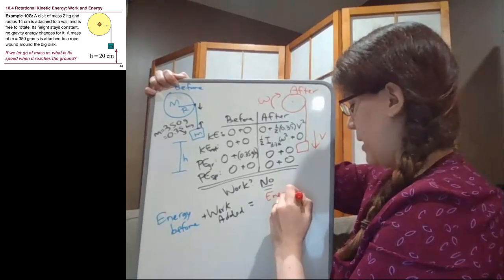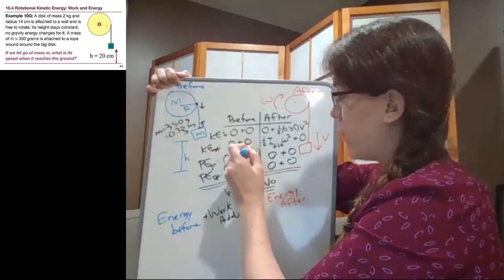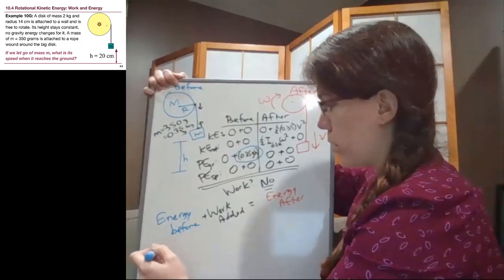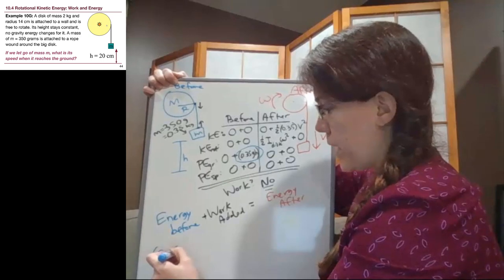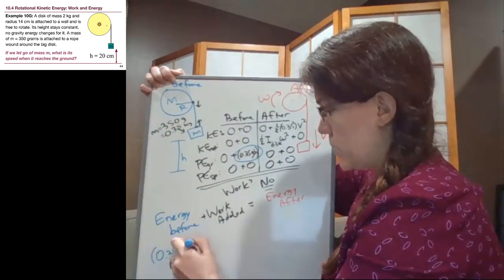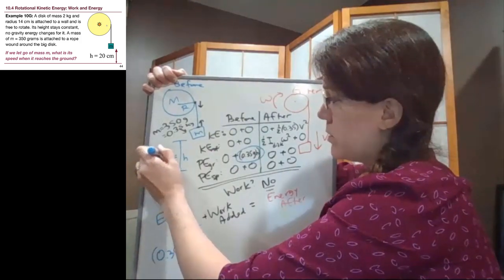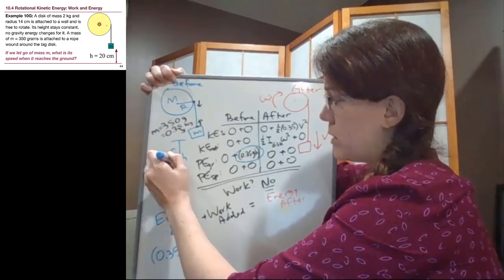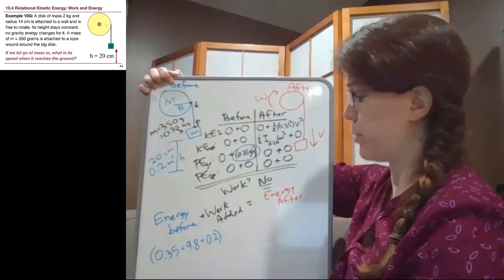And we have that in the before column, we have a single yes answer. All of the other ones were no, so they're all going to be zeros. But here we have that 0.35 kilogram mass times 9.8 times the height, which is 20 centimeters. And we know that has to be in meters, so 0.2 meters. That is our only energy at the start of the problem.